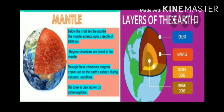The next layer is the mantle. Below the crust lies the mantle, which extends up to a depth of 2,870 kilometers. Magma chambers are found in the mantle, and through these chambers magma comes out on the earth's surface during volcanic eruptions. This layer is also known as the asthenosphere.